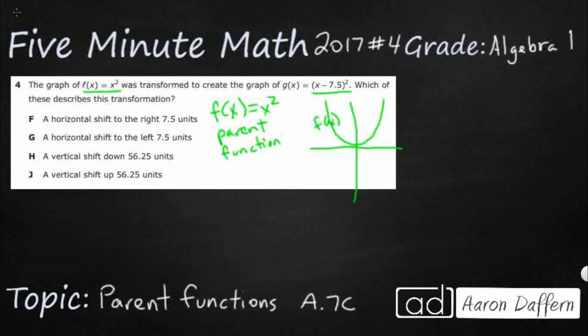Now what happens when you add an addend, and in this case it's a negative 7.5, within the x before it gets squared? So let's see what happens. So g(x), what we're doing is we are taking this x and we're going to subtract something. So we'll say it's c here before it gets squared. What does that transformation do?